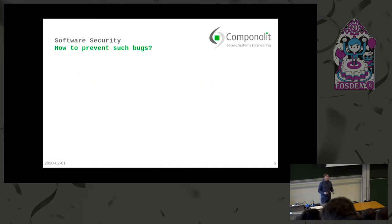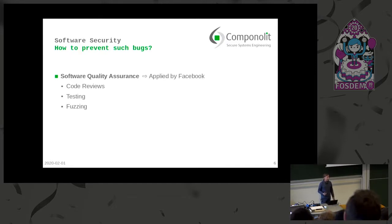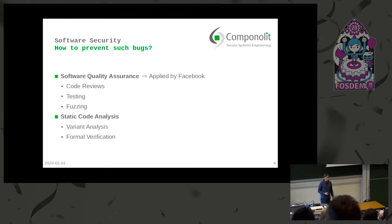But how could we prevent such bugs? The usual answer is to keep good software quality — do code reviews, testing, fuzzing and so on. But all of those are measures which Facebook did, and they didn't find this bug. So we need more intensive techniques like static code analysis, and this bug was also found that way.